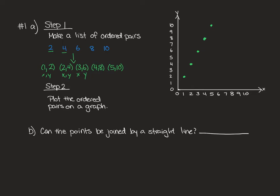Question B for this is going to ask you can the points be joined by a straight line. If you take your ruler and you can line them all up, you should be able to draw a straight line that passes through each of them. It does create a straight line. So our answer would be yes, the points can be connected by a straight line.